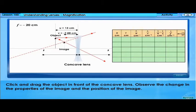Click and drag the object in front of the concave lens. Observe the change in the properties of the image and the position of the image.